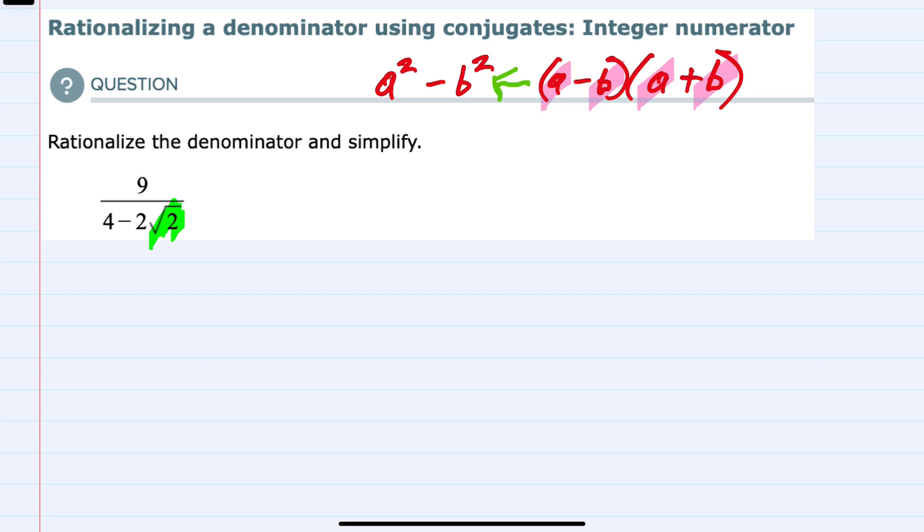And in our denominator, we have 4, which is our a here, and 2 square roots of 2, which is our b.